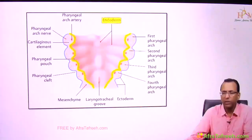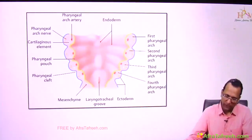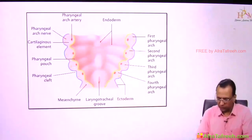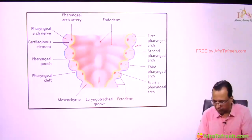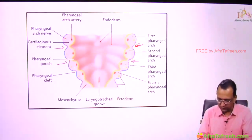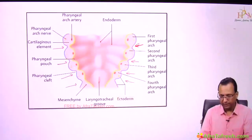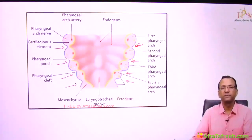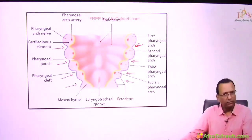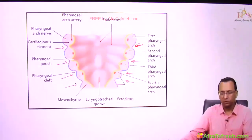Now we want to know the adult derivatives — what the pouches are doing and what is happening to the clefts. On the outside you can identify cleft 1, cleft 2, cleft 3, and cleft 4 — so there are 4 clefts, all lined by ectoderm.